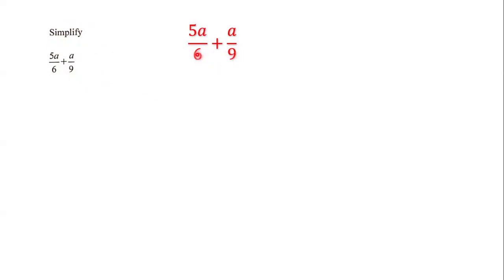Notice that the denominators are 6 and 9, which means the denominators are different for these fractions. So the first thing we're going to do is ensure that the denominators are the same before we can add the two fractions.